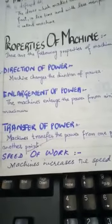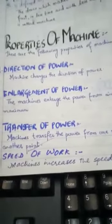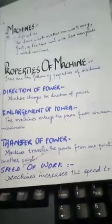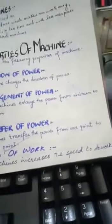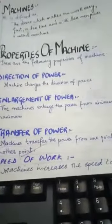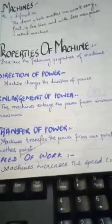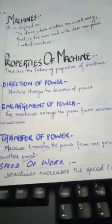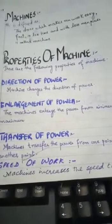Now, last but not the least, the purpose of machine is to speed up the work. Or, machine increases the speed to do work. But, sometimes, machine can reduce the speed of work. Like gears in the car. Gear is also a simple machine.